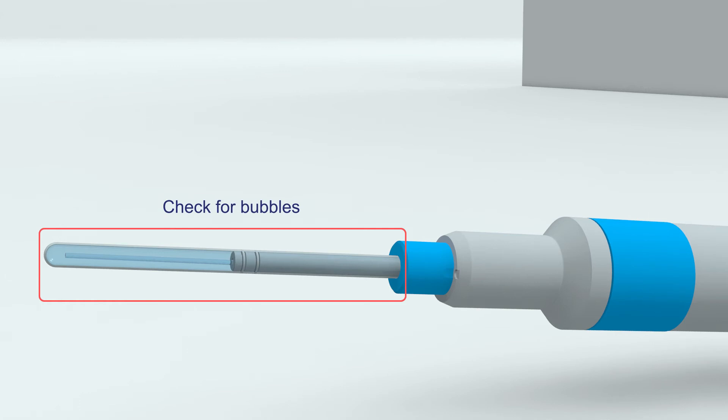Check that there are no bubbles in the glass flow tube. Now we are ready to insert the flow tube assembly.